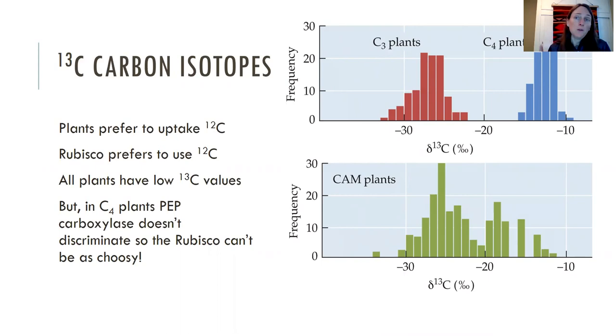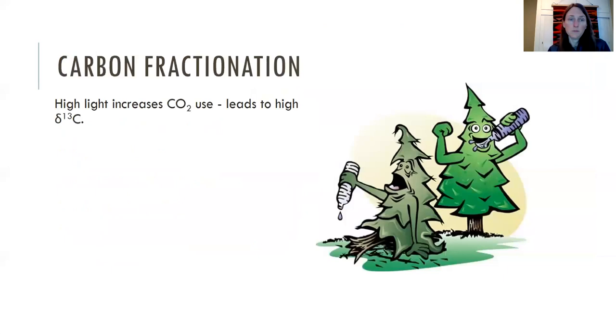And what's neat about this is not that we can tell whether a plant is C3 or C4, but we can tell what other organisms are eating, whether they're eating C3 or C4 plants. So are you eating wheat bread or corn? Those could be two different types of plants and they have different carbon isotopes; you could tell what kind of food an organism is eating.